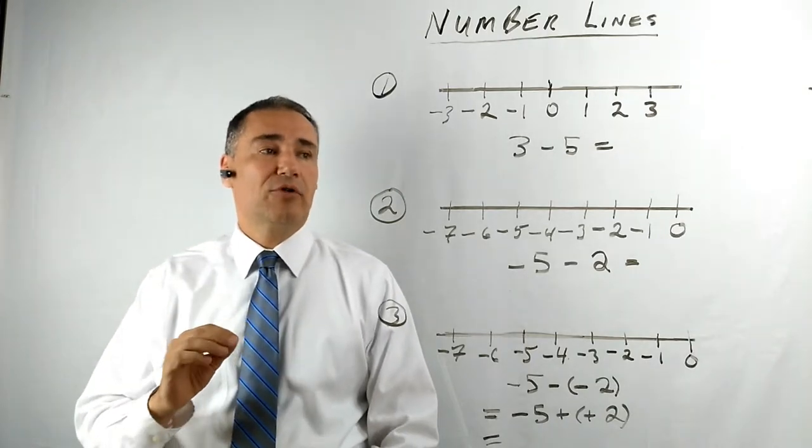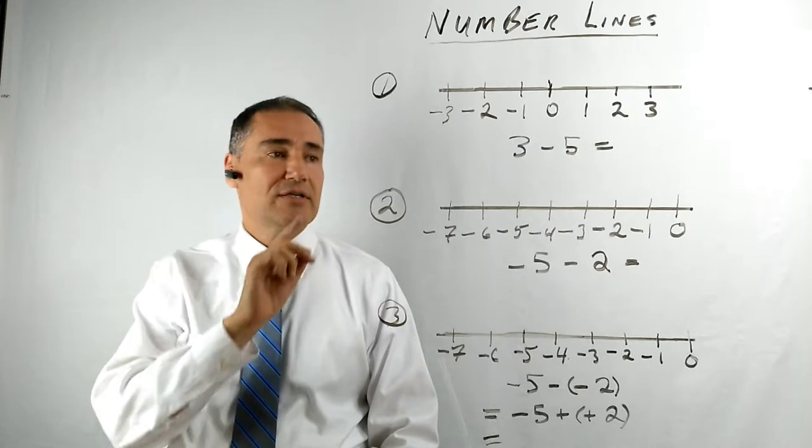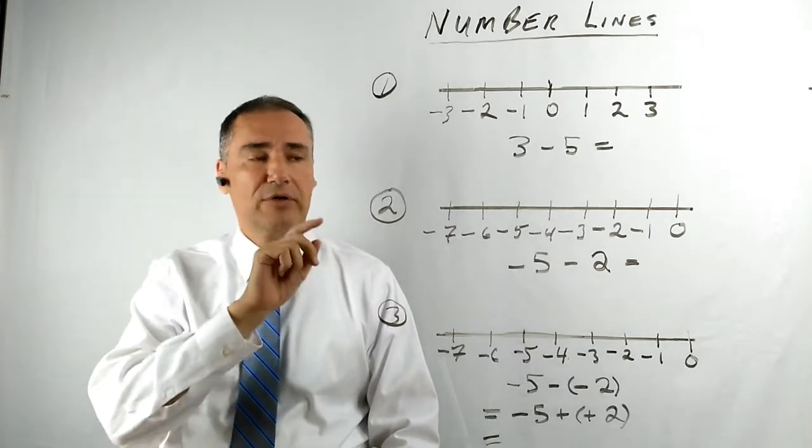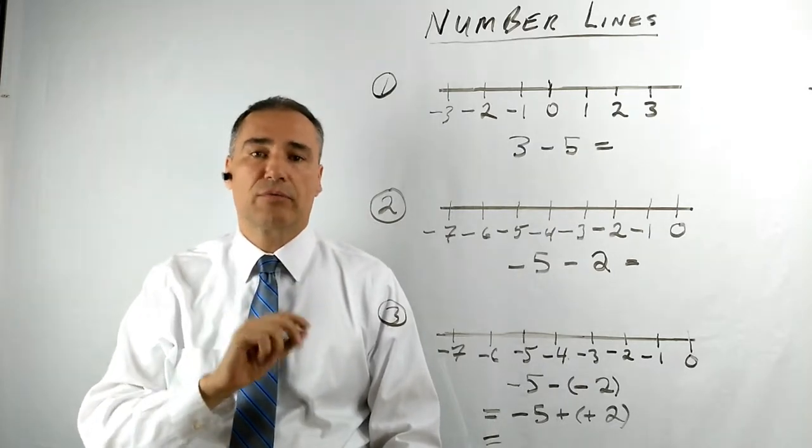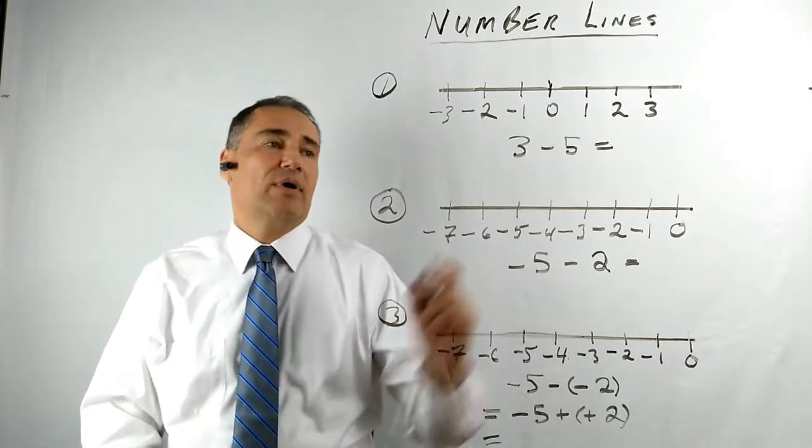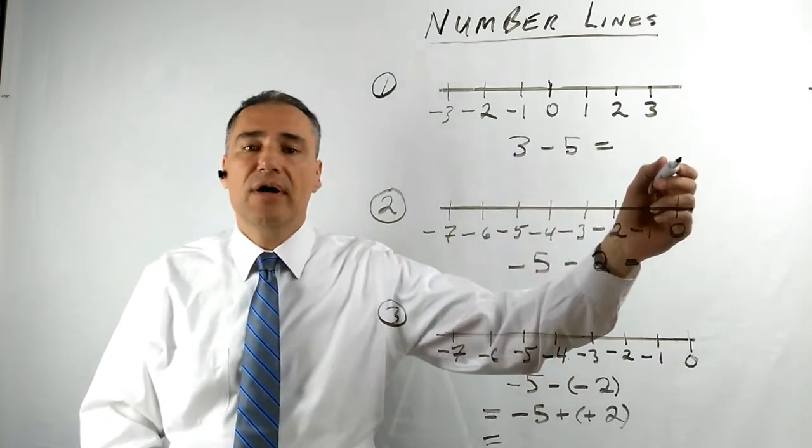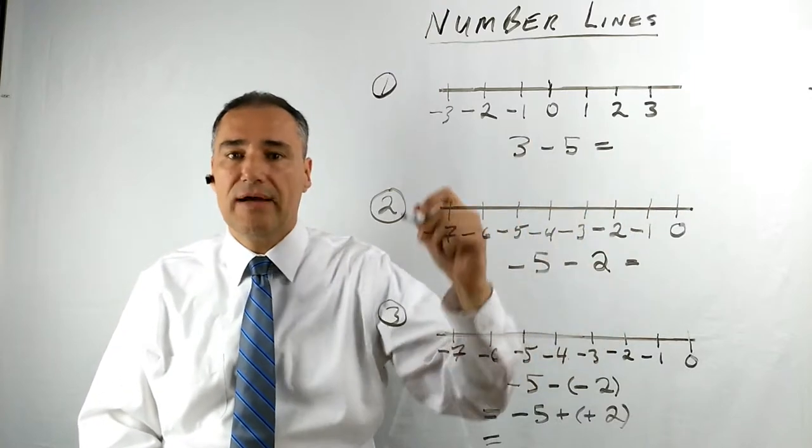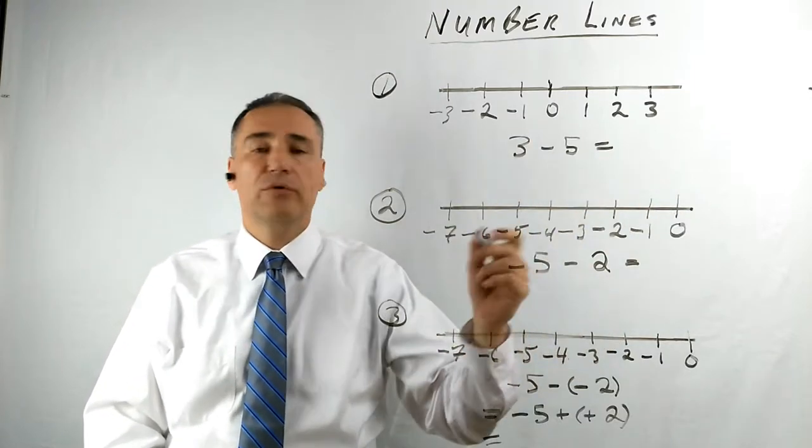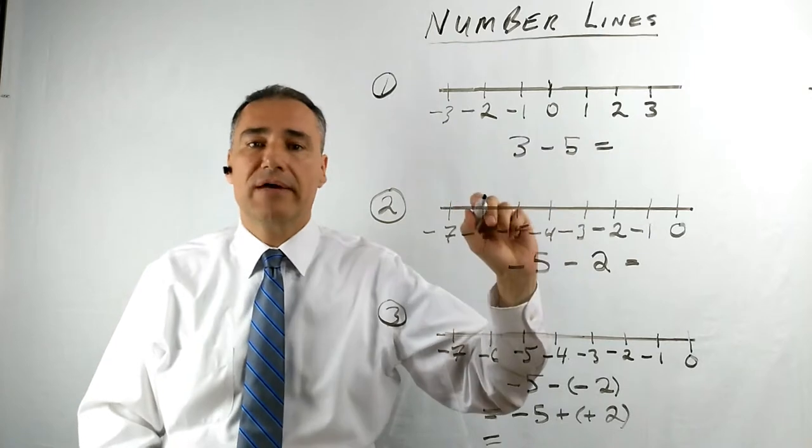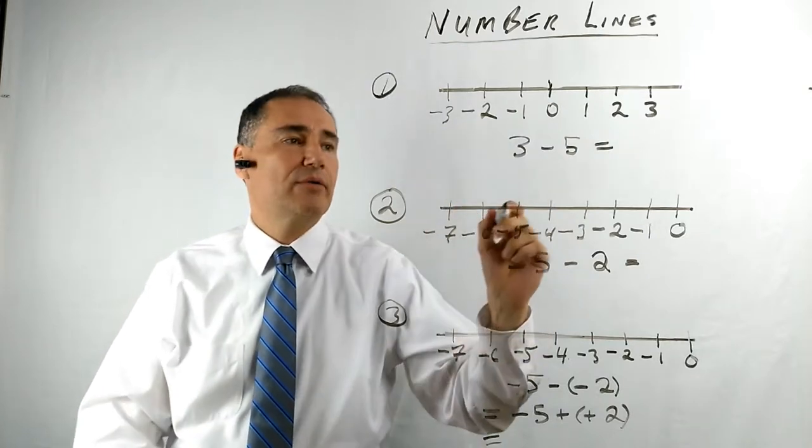Today we're going to talk about number lines, and I'm going to give you a couple of tricks, but specifically we're going to be subtracting. So again, when you're adding on number lines, you go to the right, and when you're subtracting, you go to the left. And I always urge people to use the semicircles and arrow method, and it helps to keep track of where you are.